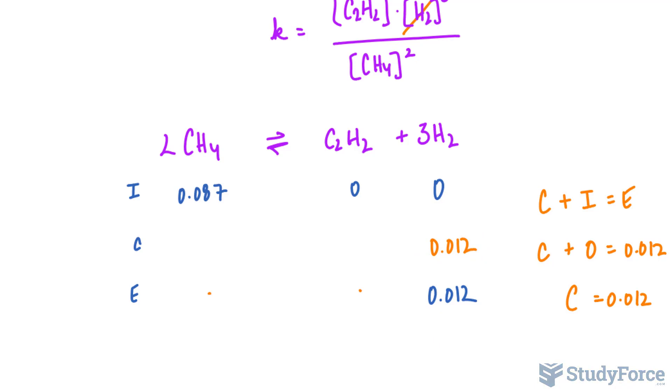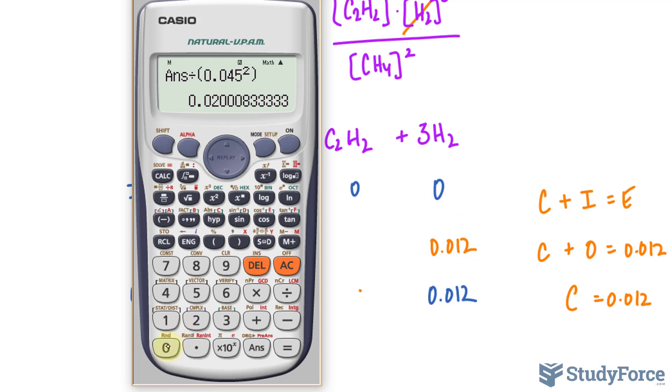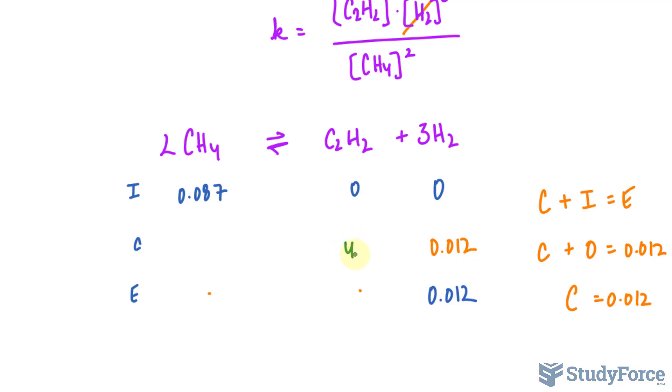Now we compare. We have three of these to one of these, so we will take this number and divide it by three. 0.012 divided by 3 gives us 4 times 10 raised to the power of negative 3. So 4 times 10 raised to the power of negative 3, that's equivalent to 0.004.